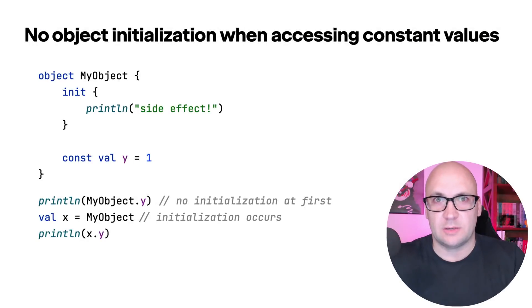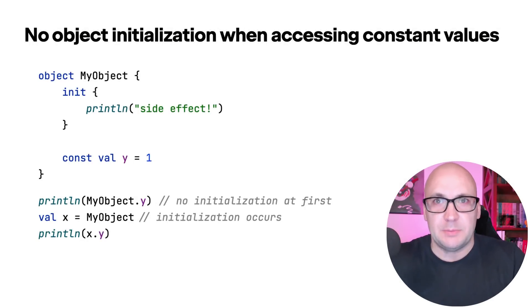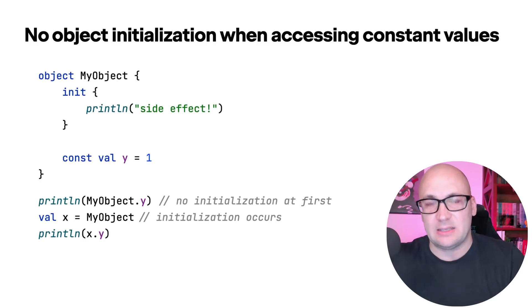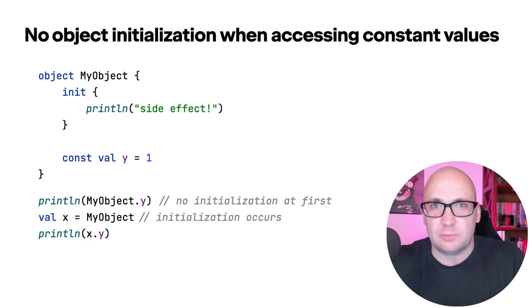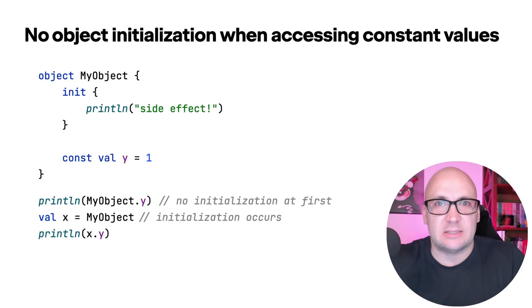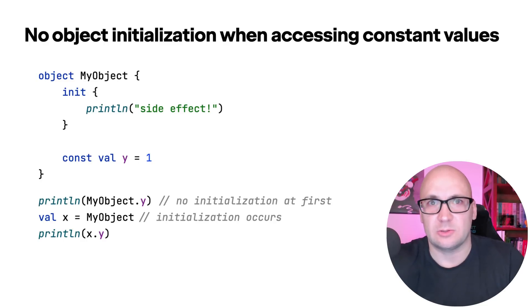The last Kotlin Native update covered in this video is an optimization that avoids initializing the object when accessing const val fields. The behavior is now unified with the JVM target, consistent with Java, where objects are never initialized in this case. You can also expect some performance improvements in your Kotlin Native projects thanks to this change.